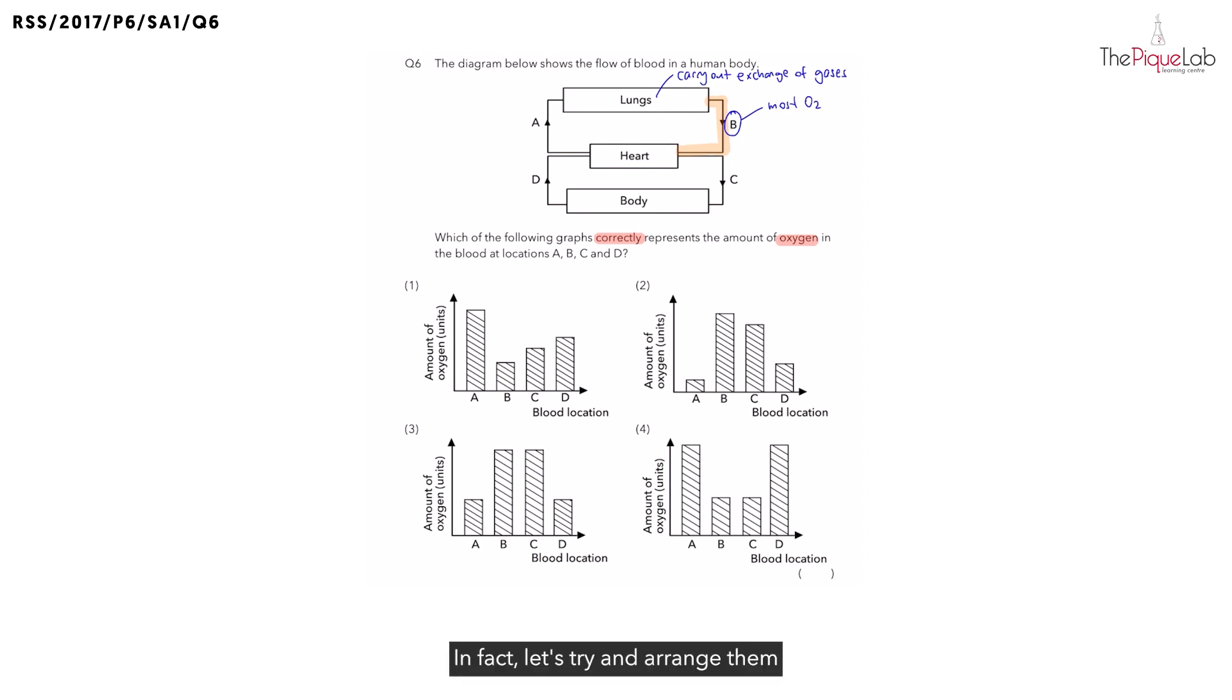In fact, let's try and arrange them from the most to the least amount of oxygen. So I'm going to write this out at the side. Most oxygen to the least amount of oxygen. We already know the one with the most oxygen is B.